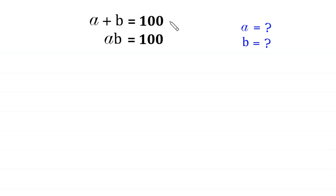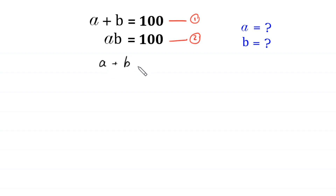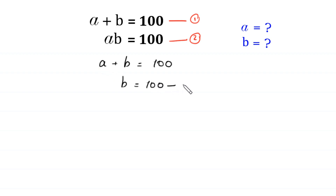We name this equation 1 and this equation 2. From equation 1, A plus B is equal to 100. We find the value of B: B is equal to 100 minus A.